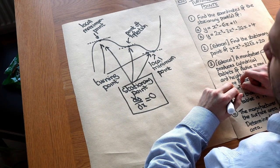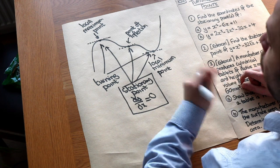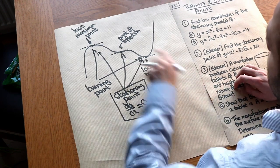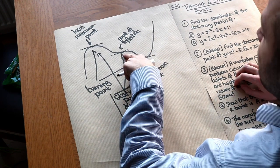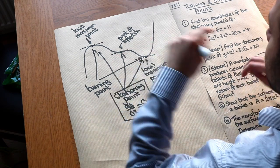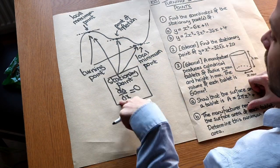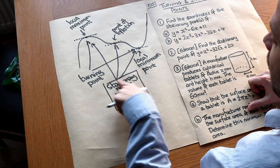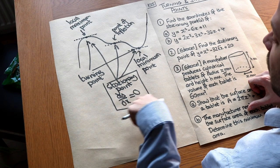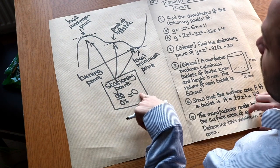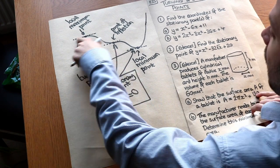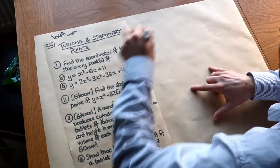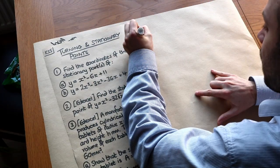So all turning points are stationary points, but not all stationary points are turning points, because it could be a point of inflection, which is a stationary point but not a turning point. For the purpose of this video, all we really need to remember is that for any stationary point, the gradient is equal to zero. So let's use that to solve these various questions.